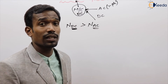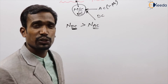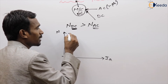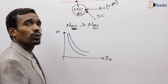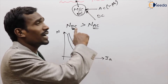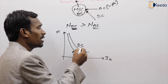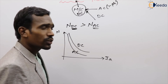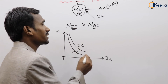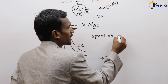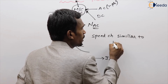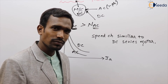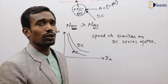For the universal motor, the speed for DC supply is greater than for AC supply. The speed characteristics of the universal motor are similar to those of the DC series motor. This holds for both DC and AC supply, with DC giving higher speed.